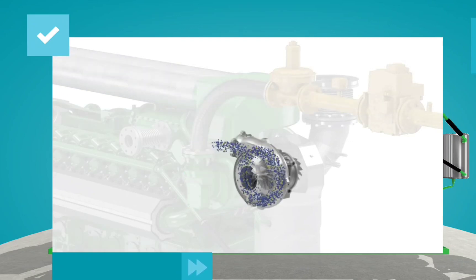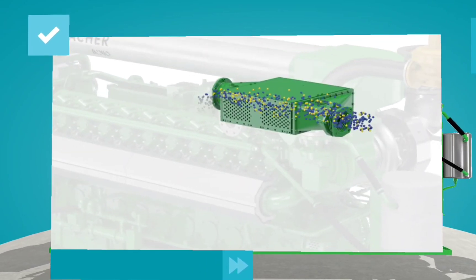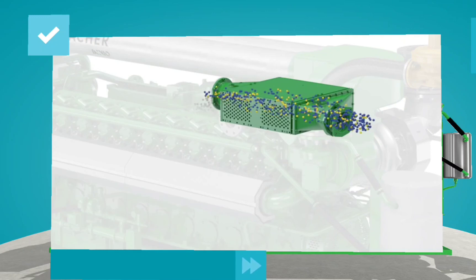To increase power output, the mixture is then compressed in a turbocharger. Since the compressed mixture also heats up, it is then cooled in an intercooler to avoid uncontrolled combustion.